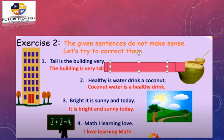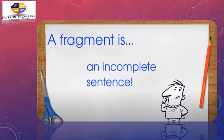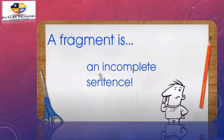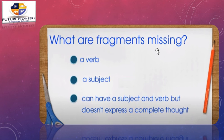Now let's go to the fragment. What is a fragment? A fragment is an incomplete sentence. If a sentence gives you a complete thought, it's a sentence. But if it doesn't give you a complete thought, it's a fragment. Fragments could be missing a verb, a subject, or they may have a subject and a verb but still not express a complete thought.